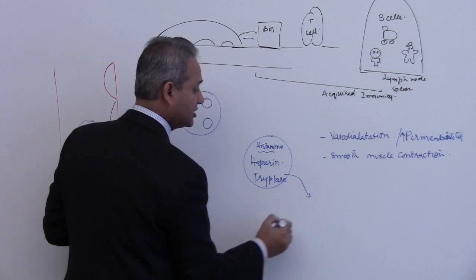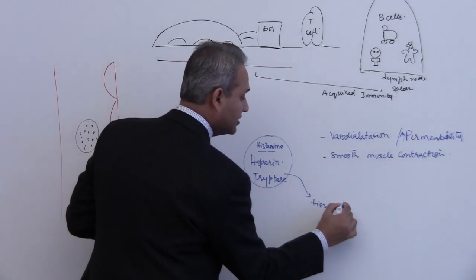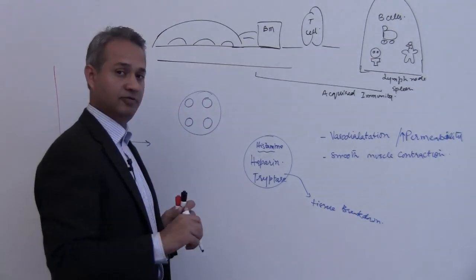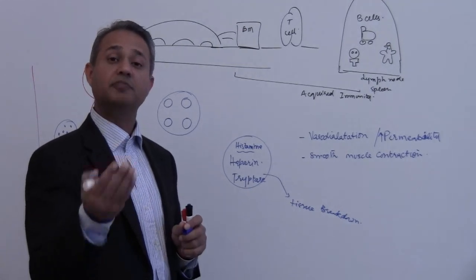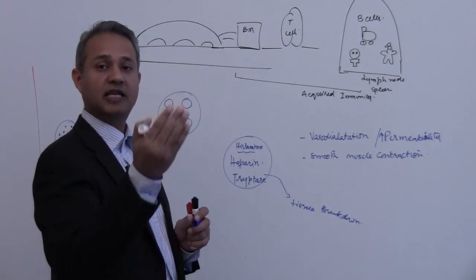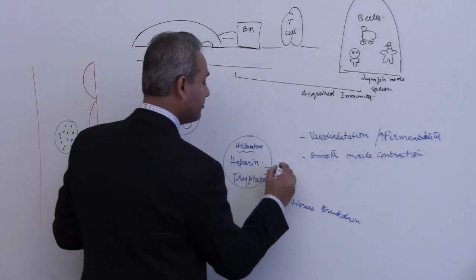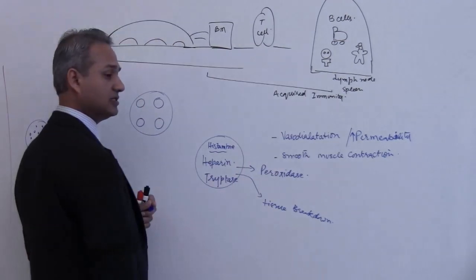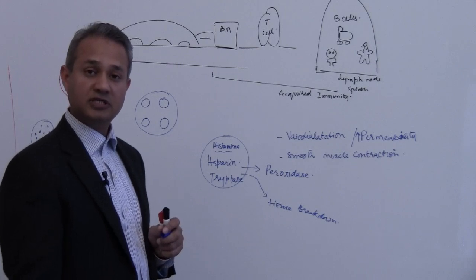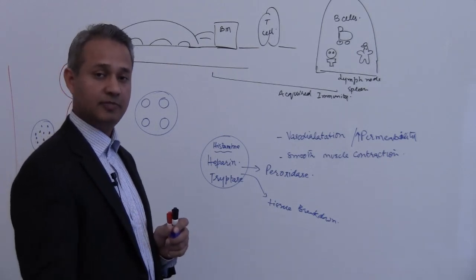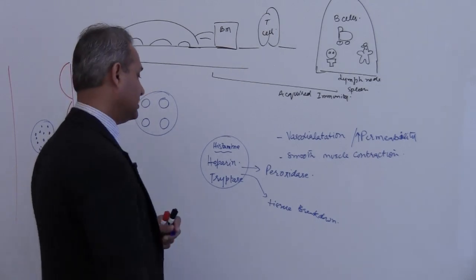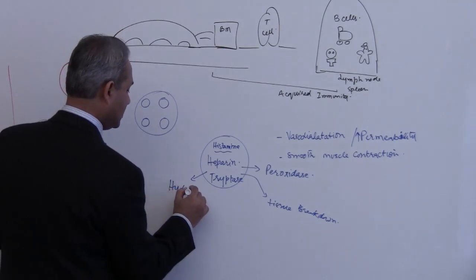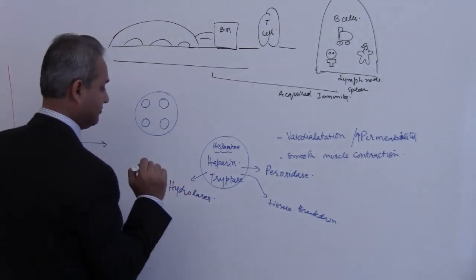Tryptases would actually go and cause a tissue breakdown. This tissue breakdown is then accompanied by arachidonic acid pathways and further tissue breakdown products or lipid mediators which then have their own action. Then we have peroxidases. Remember myeloperoxidase in the neutrophil. Peroxidases are very important enzymes which take part in creating the reactive oxygen species. Peroxidases are present in these cells as well.